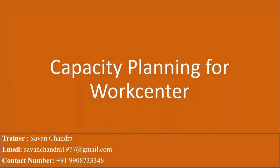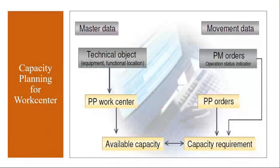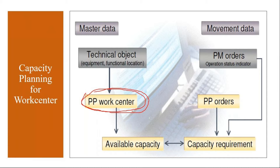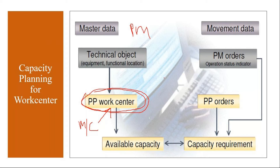The first topic is capacity planning for work centers. In PP, the machine is nothing but a work center. If you recollect our master data sessions, in PP, the production machine is called a work center. Whereas in the PM module — the Plant Maintenance module — these machines are called equipment.